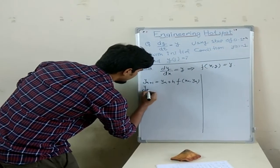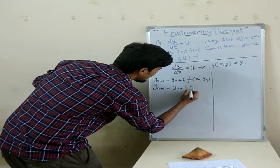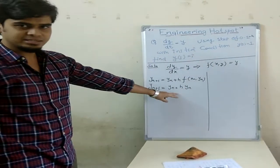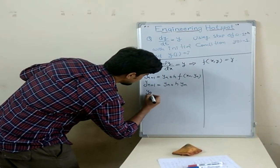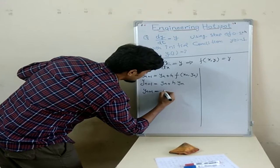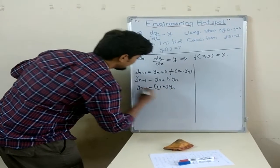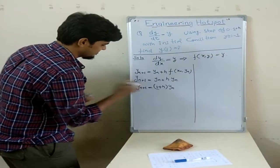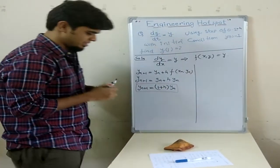So I got this: y(n) plus h times y(n). I can write this simple. And here I can write this thing equals to y(n+1) equals to (1 plus h) times y(n). This is important.